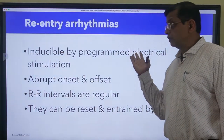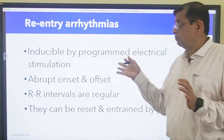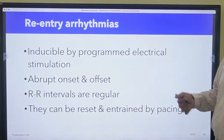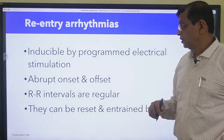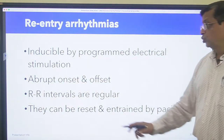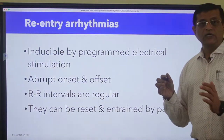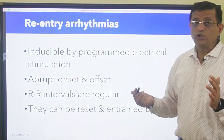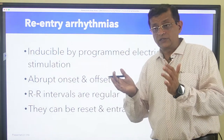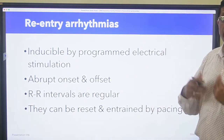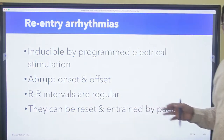Re-entry arrhythmias could be inducible by programmed electrical stimulation. If there are two tissues with different electrophysiological properties and you properly program a current induced by an electrical stimulus that comes in the premature part when the fast pathway is refractory, you can generate or stimulate re-entry arrhythmias. They have an apparent onset and offset. Usually the RR intervals are regular because they are going in a circle, and they can be reset and entrained by pacing. For example, if the arrhythmia is going at 150 per minute, you can put a pacemaker and give electrical impulses at 200 per minute - the re-entry will stop and the pacer will take over. This is called entrainment. You can reset using a pulse exactly at the excitable gap, or entrain it by fast pacing.